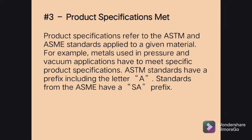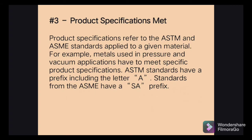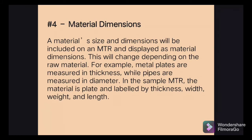The third one is the product specification. The product specification refers to the ASTM and ASME standards applied to a given material. For example, metal used in pressure vessel and vacuum applications must meet specific product specifications. ASTM standards include a letter A prefix, while ASME Section II standards use the SA prefix.